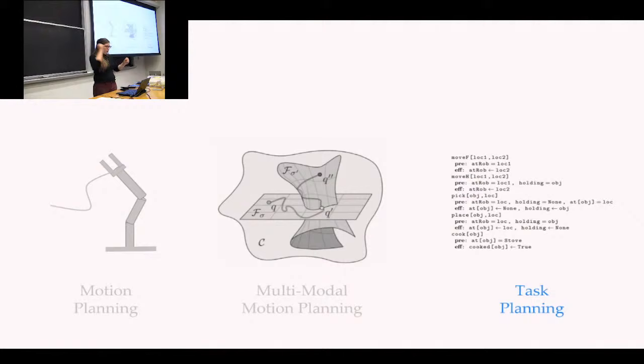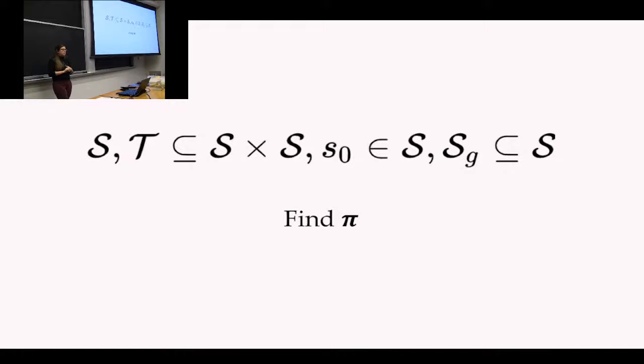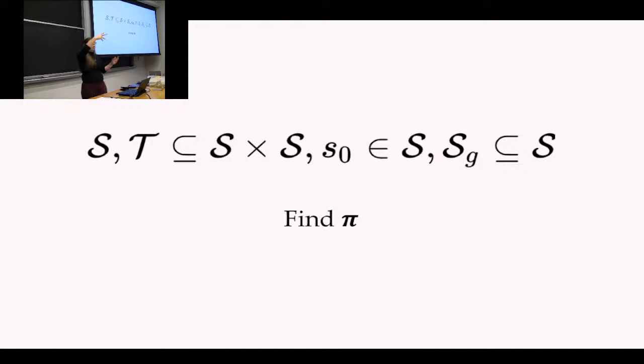Multimodal motion planning might not be efficient enough. To get around that, we're going to leverage the representational power that comes from task planning. For the next few slides we're going to be in a discrete world. You have a discrete set of states, a transition function defining legal changes between states, a start state, some goal states, and your goal is to find a path from start to goal following your transitions. You can imagine this as a graph where your nodes are states and your transition function defines directed edges — you could just apply graph search.